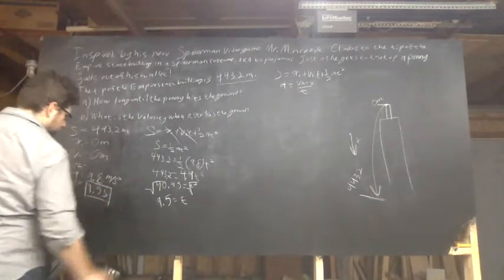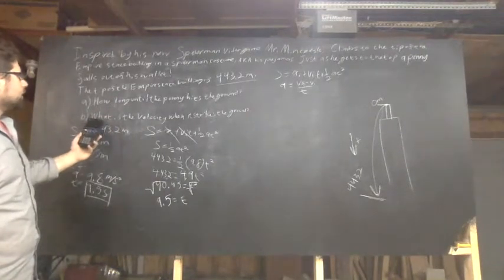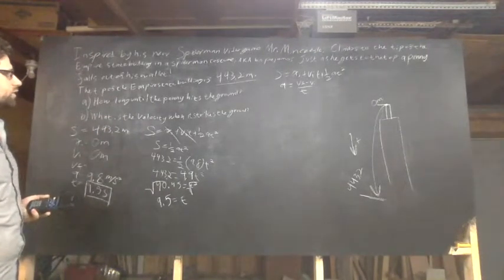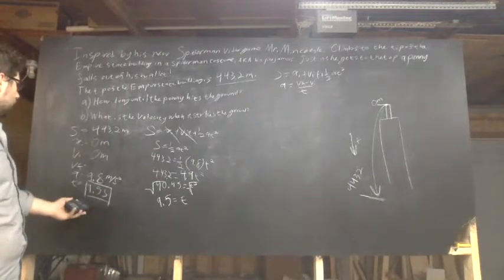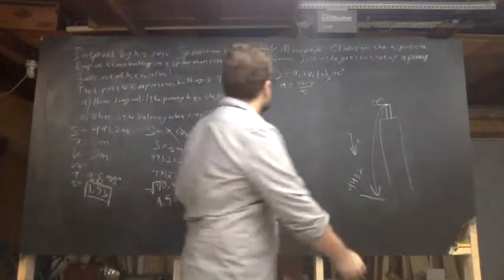Box it off so my instructor knows what my answer is and move on. So that was A. What about B? What is the velocity when it strikes the ground? So I know time, I know acceleration, I know my initial velocity. That's going to be really easy to solve.